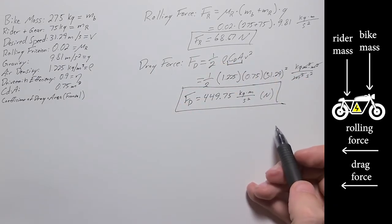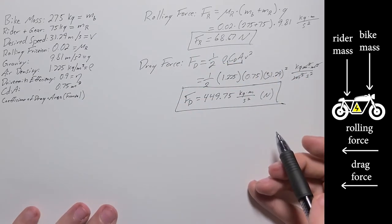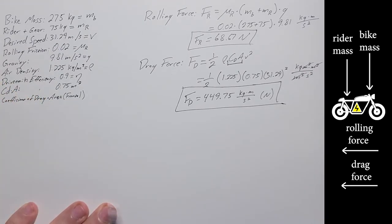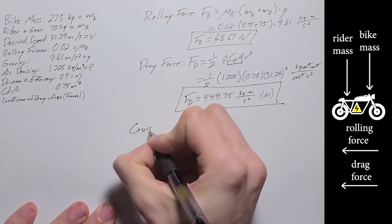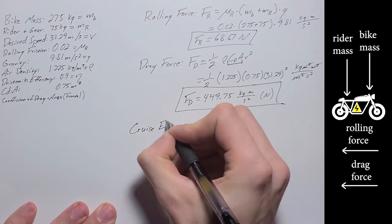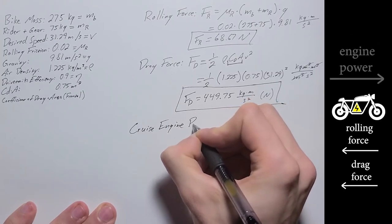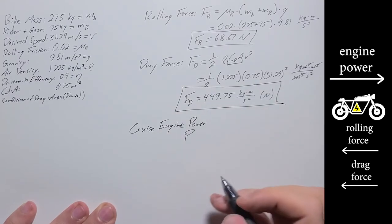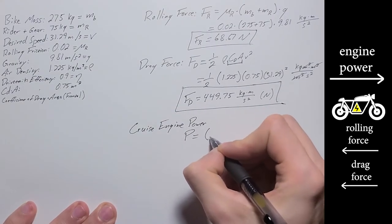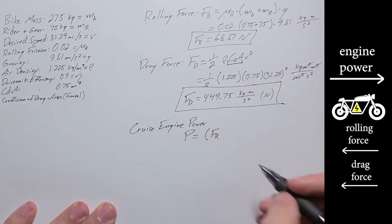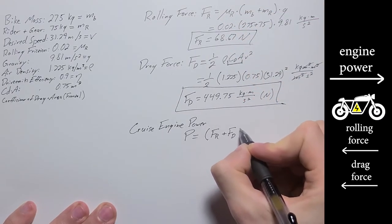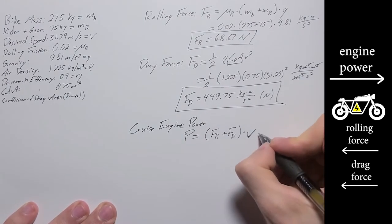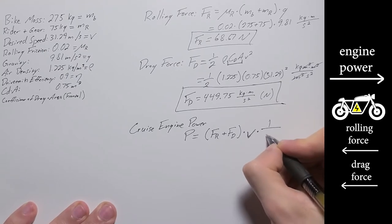Force for both rolling force and drag force in newtons. So now that we have these forces, now let's calculate the power required to cruise at this speed and these parameters. So this is going to be our cruise engine power. Power equals our rolling force plus our drag force times, again, speed we're going at. And then here's where that efficiency factor comes in.